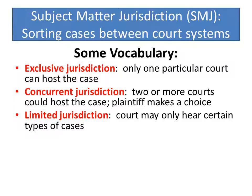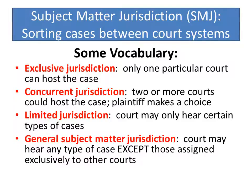When we say a court has limited jurisdiction, it means that court may only hear certain kinds of cases. Spoiler alert: federal courts are courts of limited jurisdiction, and that's why we spend so much time worrying about what cases can be filed in federal court. When we say a court has general subject matter jurisdiction, it means it may hear any type of case except those assigned exclusively to other courts — a catch-all category. Most state courts have at least one court of general subject matter jurisdiction.